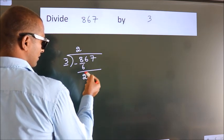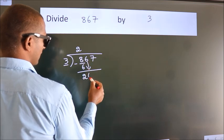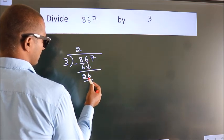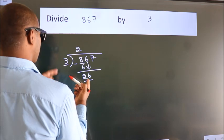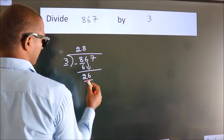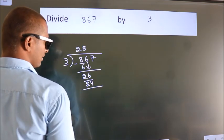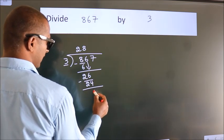After this, bring down the beside number. So 6 down. So 26. A number close to 26 in the 3 table is 3 times 8, which is 24. Now we subtract. We get 2.